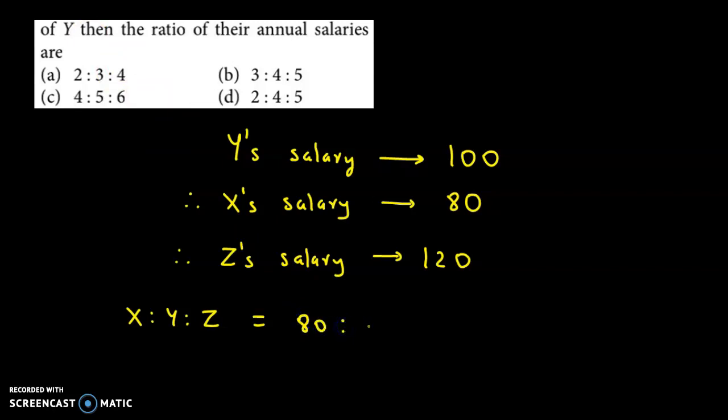Now we reduce this. We can cut one zero from each. We reduce by 2: 2 fours are 8, 2 fives are 10, 2 sixes are 12. The required ratio is 4 is to 5 is to 6. So the correct answer is option C.